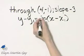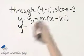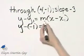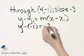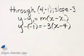And now let's plug in our replacement values. In this case, y minus the y value of the ordered pair is negative 1, equals slope which is negative 3, times x minus the x value of 4.